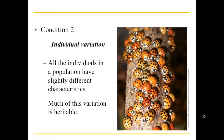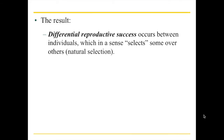So those are the two main conditions: struggle for existence because of overproduction, and some level of genetic variation in these organisms. As a consequence, you end up with what we refer to as differential reproductive success. This differential is what makes one individual or group of individuals a little bit better than the next. Over a long period of time, these small differences incrementally shift the population.